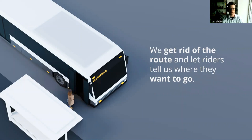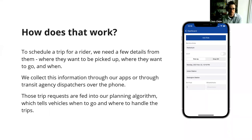We collect ODT data by getting rid of fixed routes and letting riders tell us exactly where they want to go. Instead of dictating where service is available, we ask where riders want service to be. We make every stop in the service area available to every other stop. Riders need to provide just three details: a pickup point, a drop-off point, and a requested time — that's all we need to arrange a trip for them.